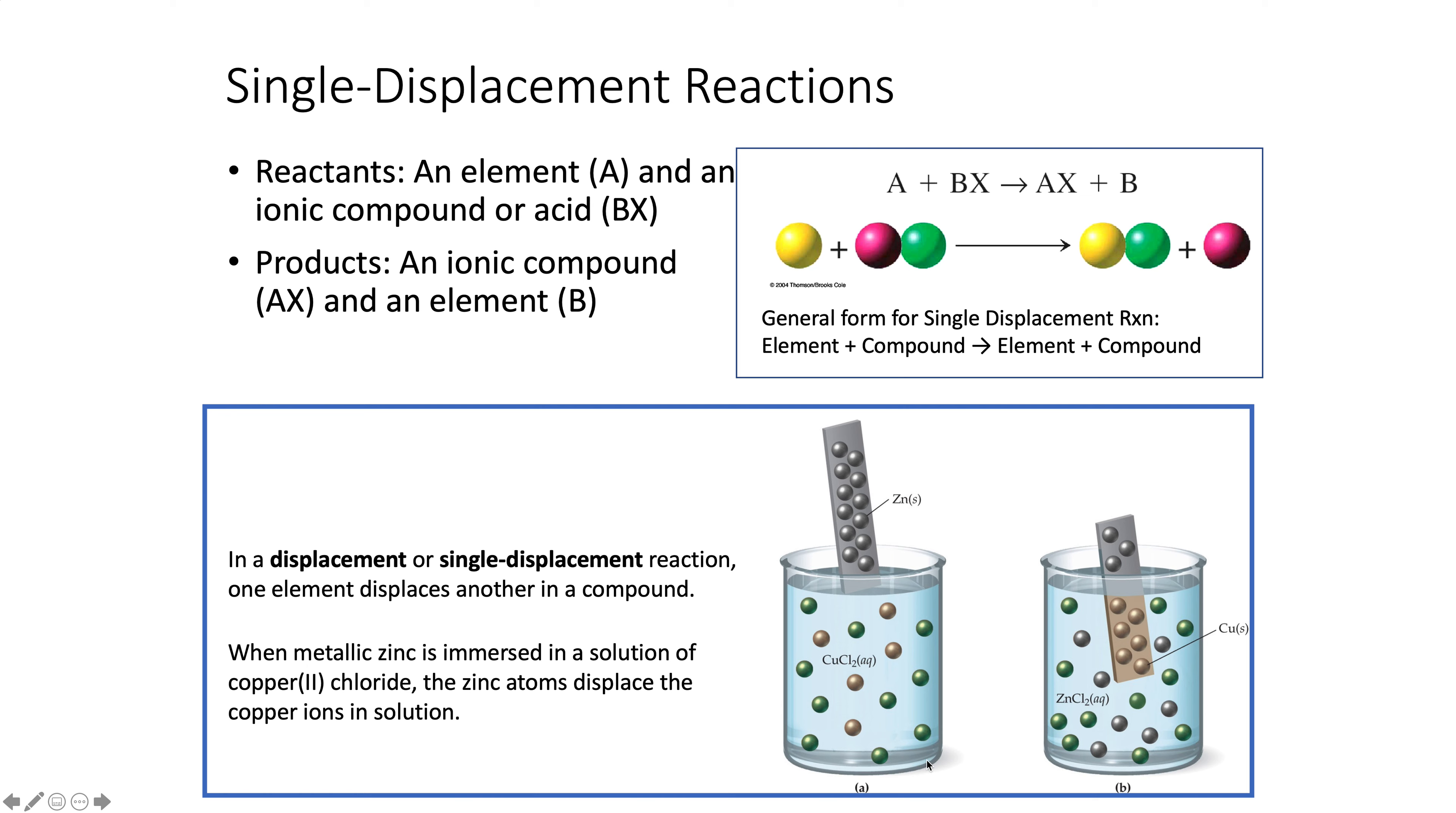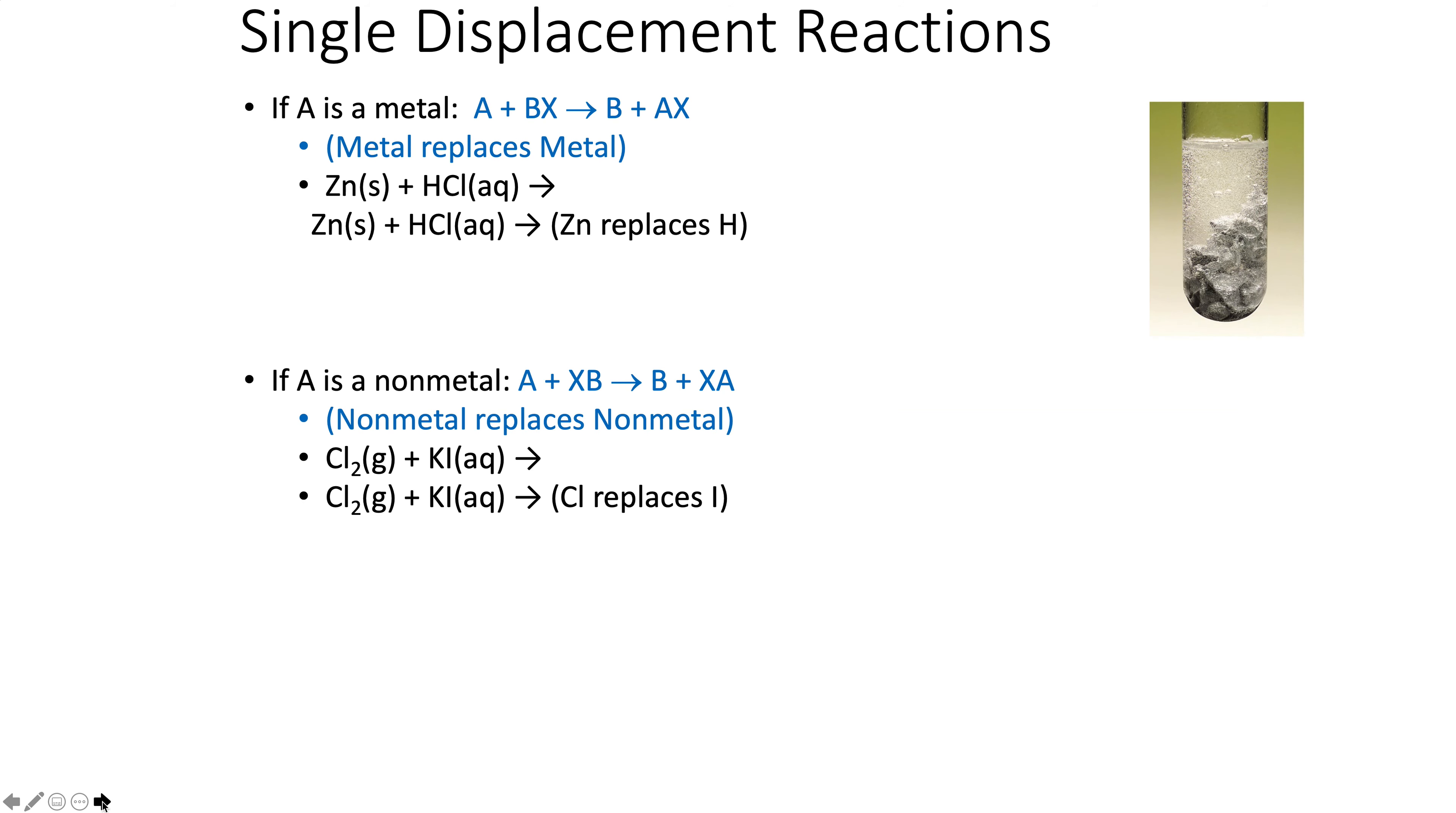These are used in plating a lot of times and batteries use this type of reaction. Basically if A is a metal, then metals replace metals. So A would replace B if A is a metal. Also, A has to be more reactive than B. How do you know that? Hang on, you'll see that in a slide or two.